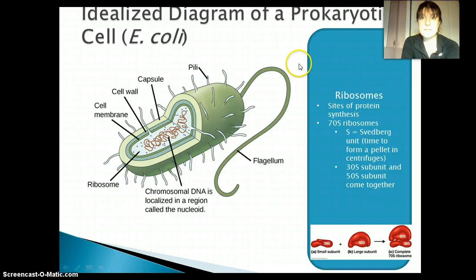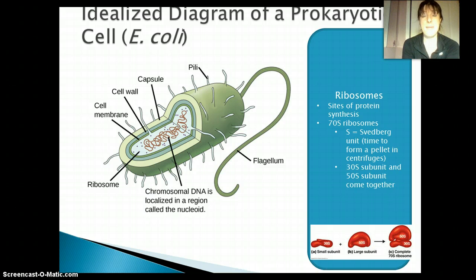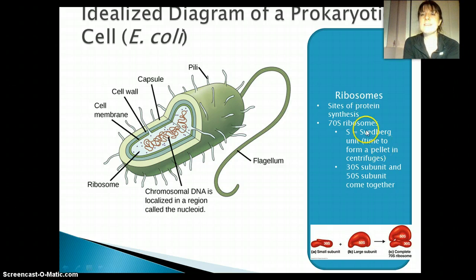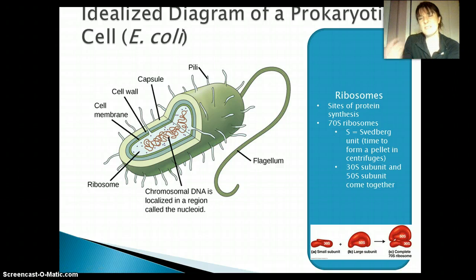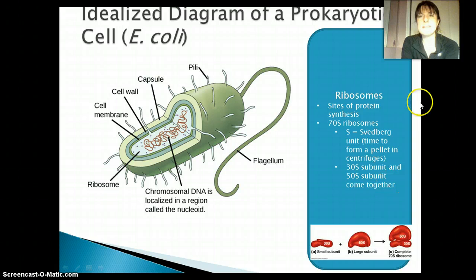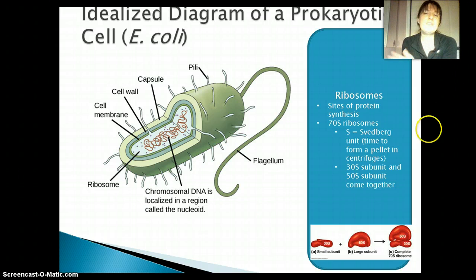Next we have ribosomes. All ribosomes are where protein synthesis occurs — proteins do so much in the cell, and ribosomes are where the proteins themselves are made. Prokaryotic cells have 70S ribosomes, which means they're a different size than eukaryotic ribosomes. The 'S' stands for the Svedberg unit, which measures the time it takes to form a pellet in a centrifuge. Just know that 70S is a smaller size than 80S. A ribosome has two sections — a 50S and a 30S subunit — and when they come together we get 70S.